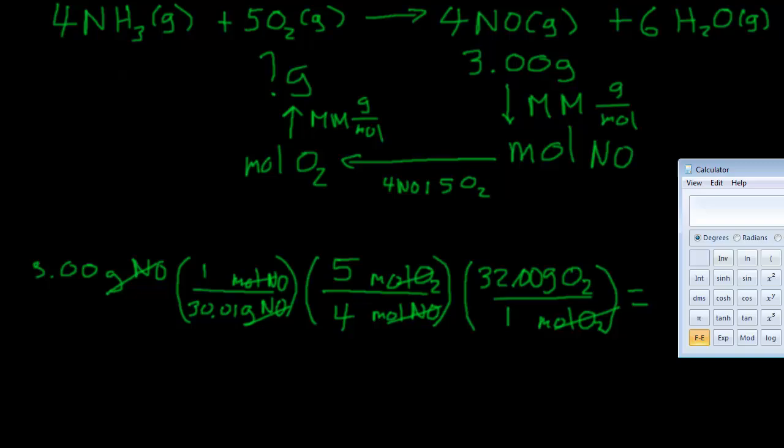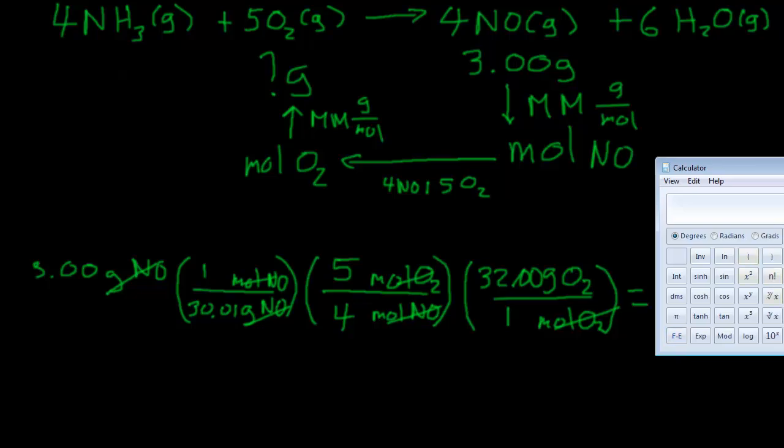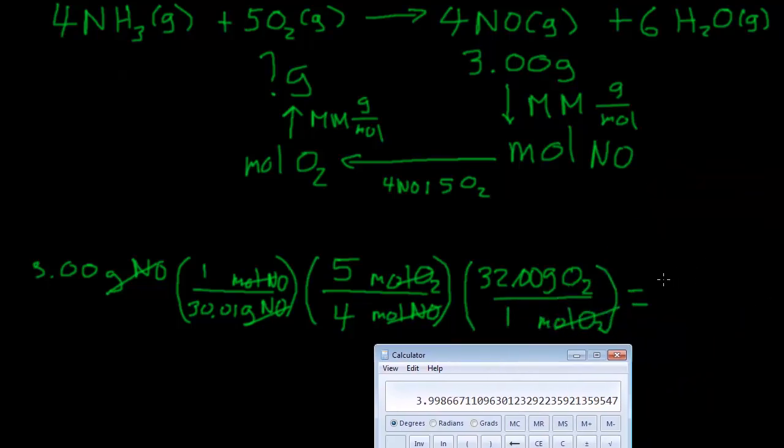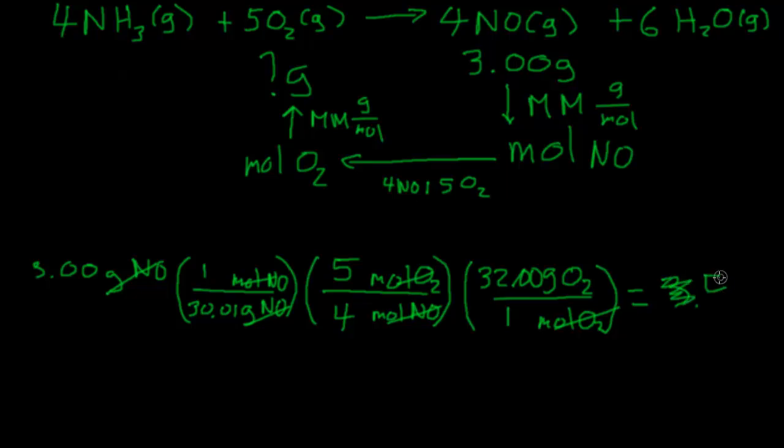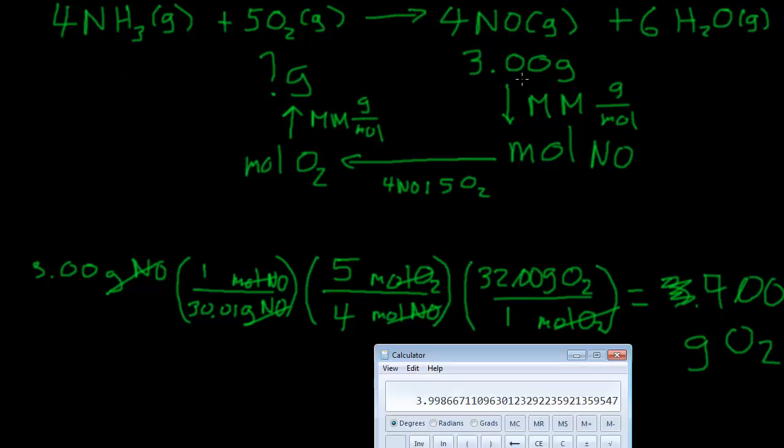Let me bring my calculator back up here. Let's do this calculation. So 3.00 times 5 times 32 equals that. Now we need to do our division, so we're going to divide by 30.01, then divide by four. That gets a number that's about four: 3.99, we'll just say 4.00 grams of O2. So if you have three grams of NO, how many grams of O2 is it going to take to react to make that? You're going to need about four grams. That's how we can use the factor-label method to calculate a stoichiometry problem.